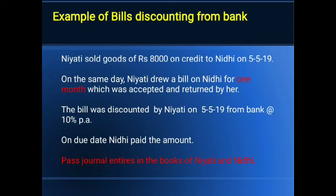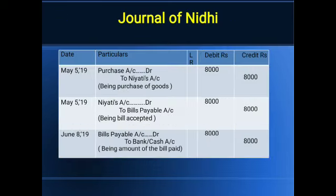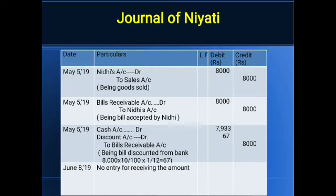On the due date, Nidhi pays the amount. In Nidhi's books the entry is: Bills Payable debit to Bank. The bank is receiving this amount because the bill is in the hand of the bank. No entry will be passed in Niyati's books for receiving the amount, because the bank is receiving this amount as per the instructions of Niyati. I think the matter is clear. You should try to make practice. Thank you.